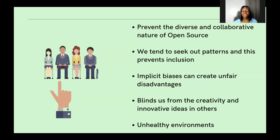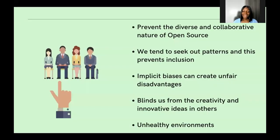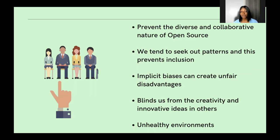Another way implicit bias affects D&I is by creating unhealthy environments. Communities develop a reputation when many persons say that community doesn't have a welcoming environment. If someone shares a negative experience, that person tells another, who tells another — and the ripple effect eventually affects how people perceive a community at large based on one person's negative experience.